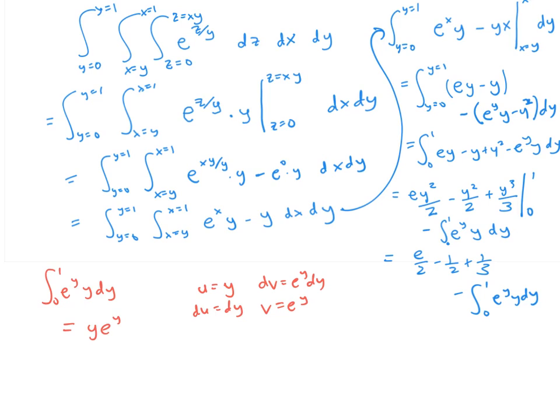Using the formula for integration by parts, I have u times v. So that's y e to the y, minus the integral of v du. So that's e to the y dy. Of course, these are all evaluated from zero to one. So that's going to be y e to the y minus e to the y. And let's see, that simplifies to negative one.